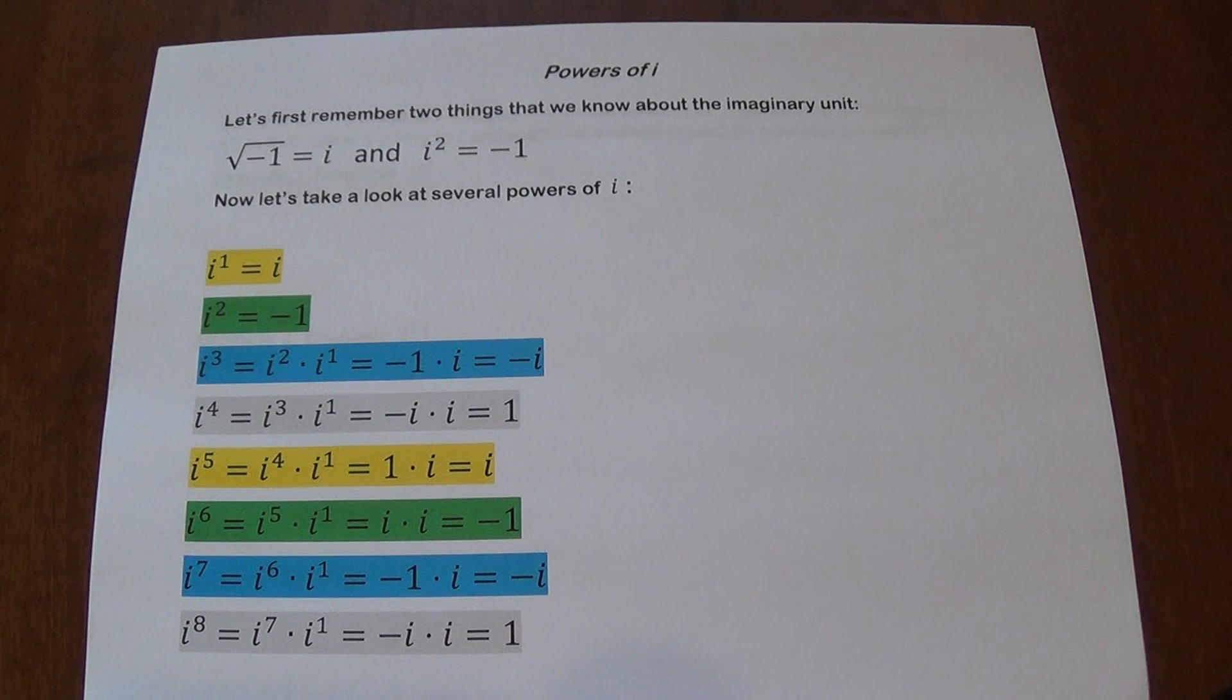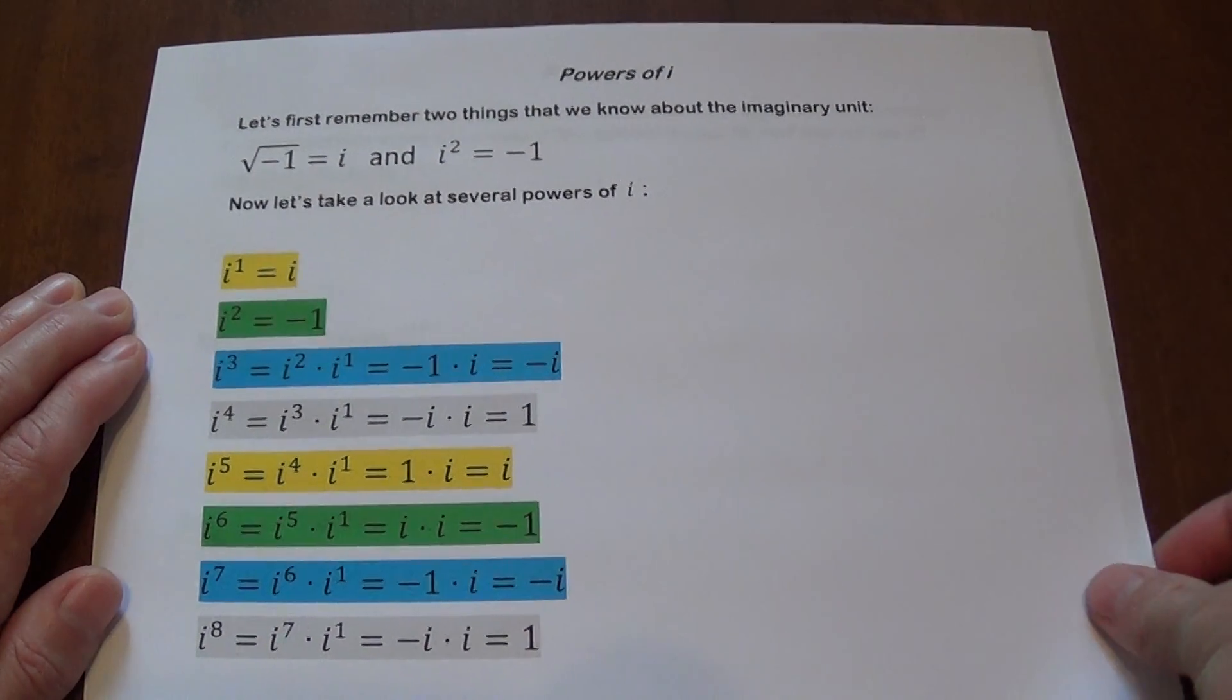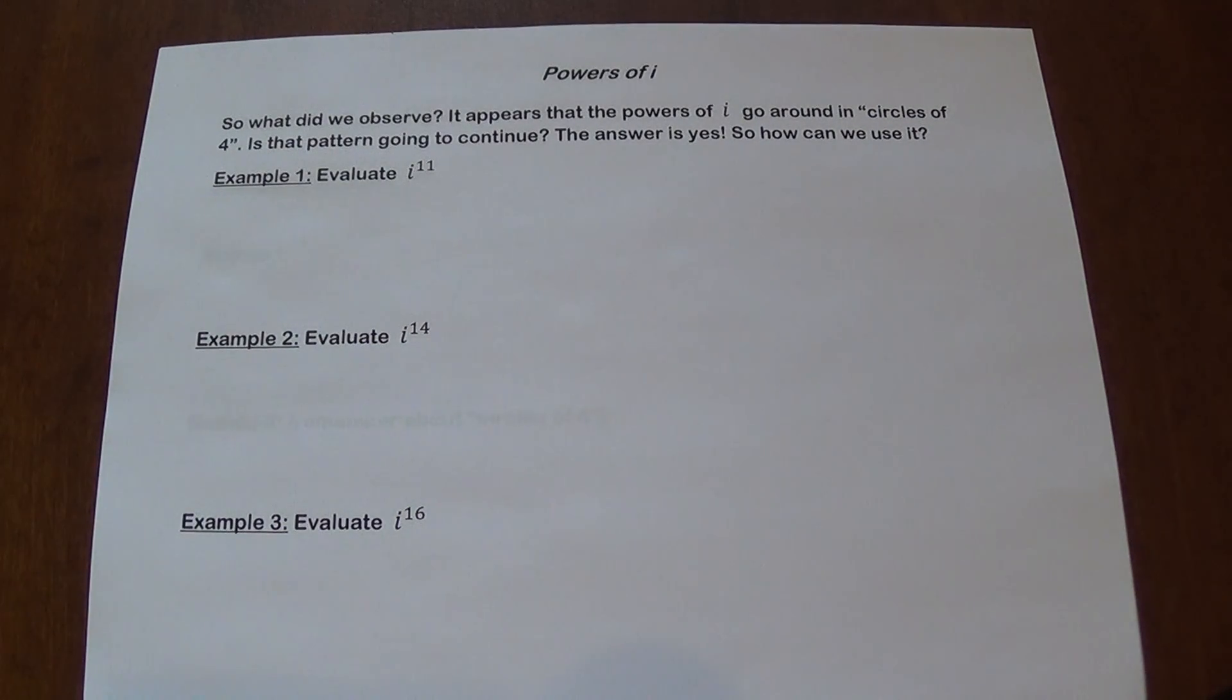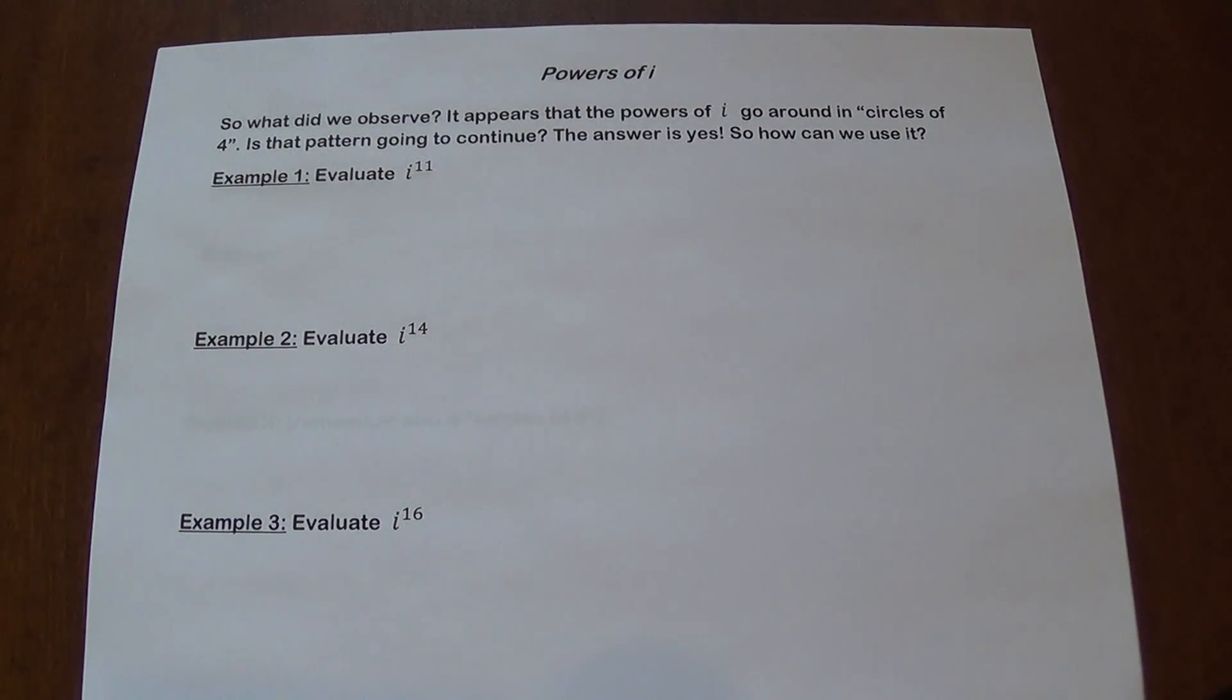You should be able to see that there is a pattern. We have i, negative one, negative i, one. i, negative one, negative i, one. Did we observe the pattern? I think so. And it appears that we go in circles of four. Every four is going to repeat itself. That pattern is going to continue. Let's see how we can use this.